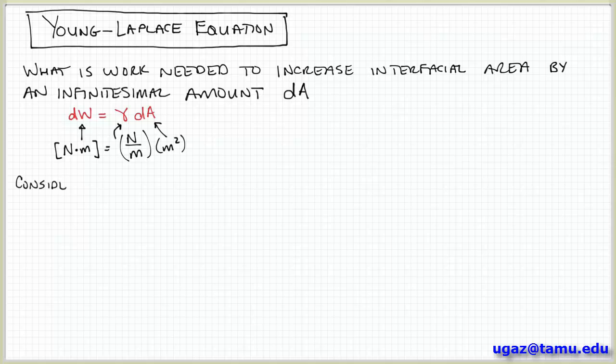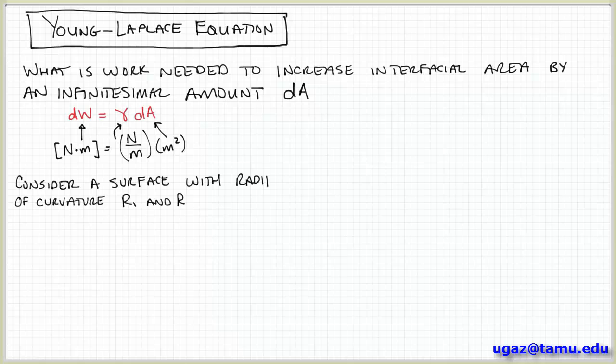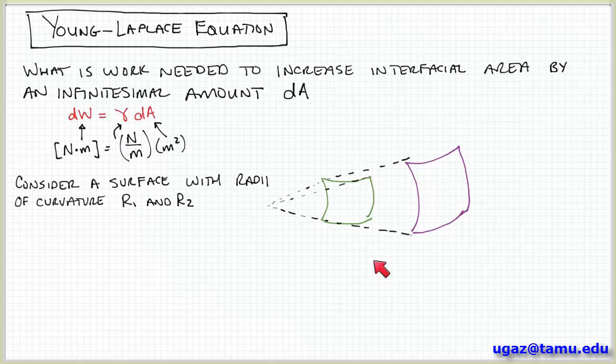So now we're going to try to apply this to a specific case. So I'm going to look at geometry here. Let's consider a situation where we have the work associated with increasing a surface that we can describe in terms of two different radii of curvature, R1 and R2. This is a generalized curved surface. So let me draw what I'm talking about. So I have two area elements on this curved surface. This green one is the initial area, and the purple one is the expanded one. So you can think of this as a balloon, for example.